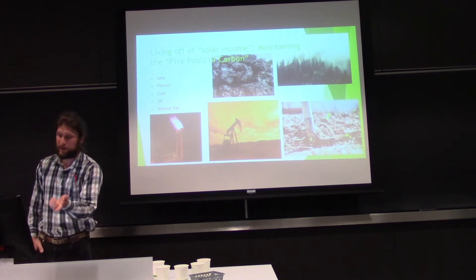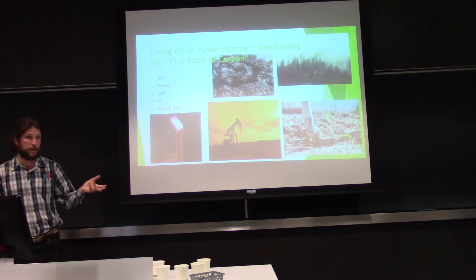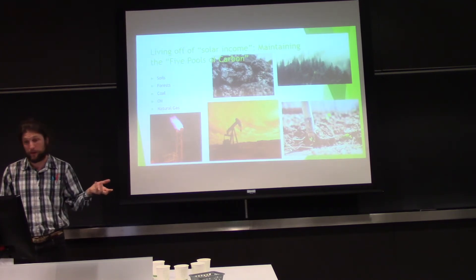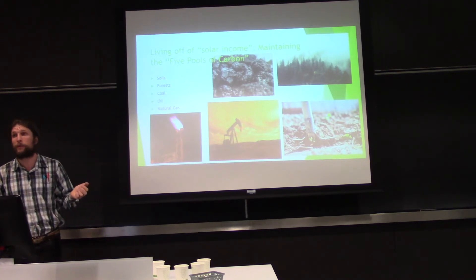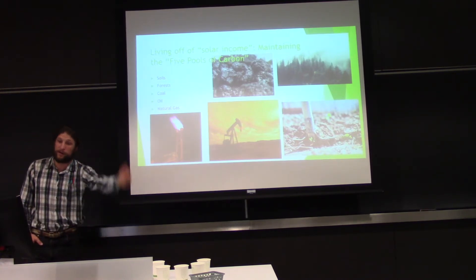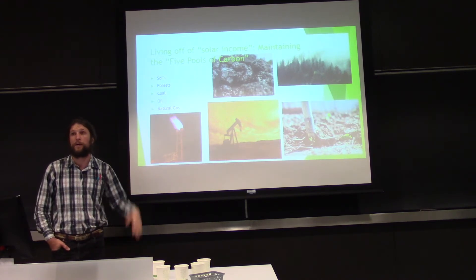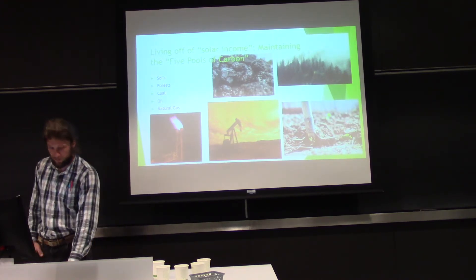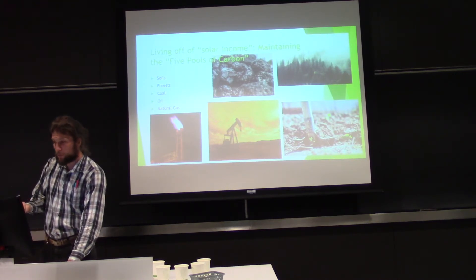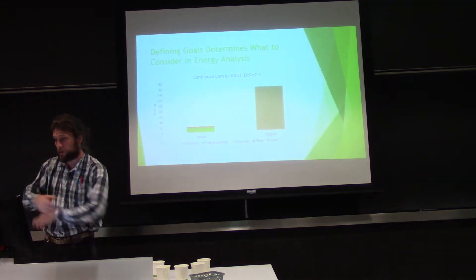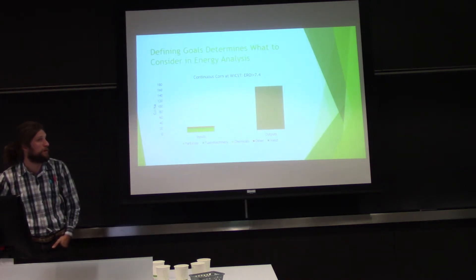So, now, once again, I'm stealing from Wes Jackson here. Living off of solar income is an important part of sustainability. And so, Wes Jackson talks about five pools of carbon that we were degrading, accumulated carbon in soils and accumulated carbon in forests far before people figured out how to really use a lot of coal, oil, and natural gas. And if you're thinking about it from this perspective, you actually might want to think about energy a little bit differently.